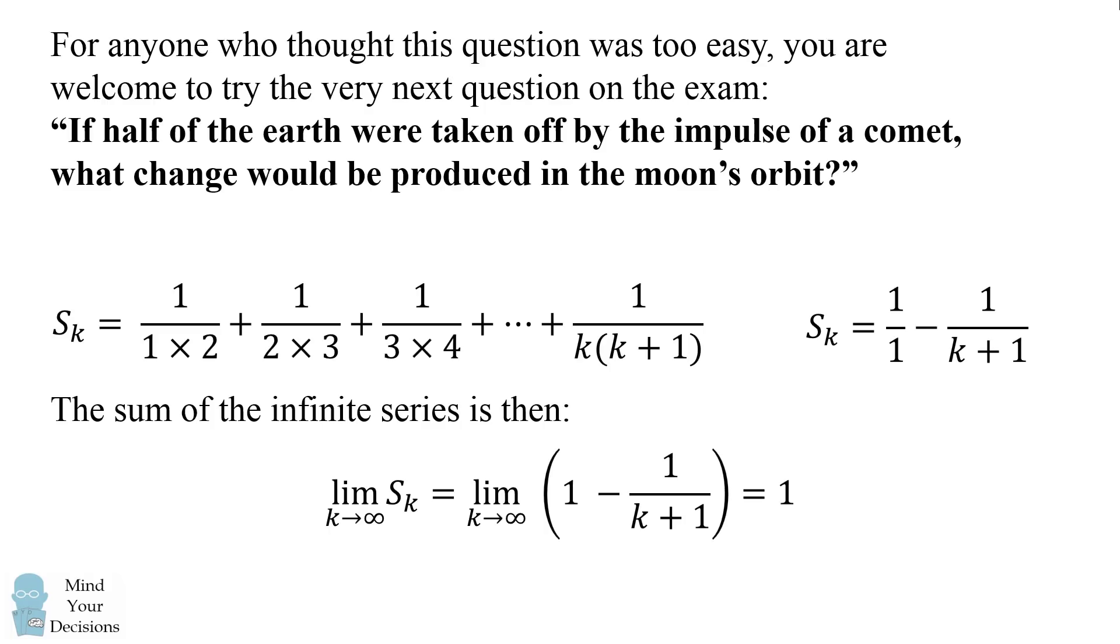If half of the earth were taken off by the impulse of a comet, what change would be produced in the moon's orbit? I don't know the answer and I could not quickly figure out the answer from doing a few internet searches. So if you know the answer to this question, please share your knowledge in the comments.